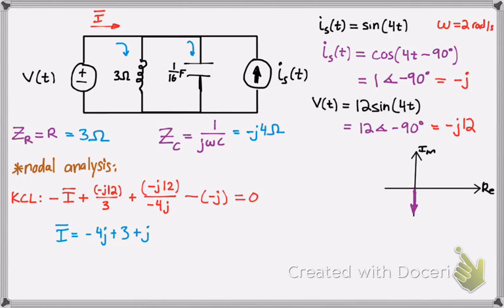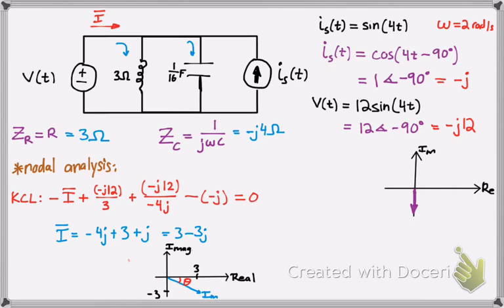Simplifying that expression, we get 3 minus 3j. Writing that in rectangular form, the real part is 3 and the imaginary part is negative 3. Since the sides are equal, the angle is negative 45 degrees. Calculating the magnitude using the Pythagorean theorem gives 3 radical 2. So we can rewrite I-bar in phasor shorthand as 3√2 angle negative 45 degrees.